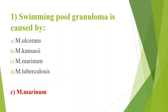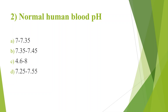Thus swimming pool granuloma is caused by Mycobacterium marinum. Second question: Normal human blood pH. Option A, 7 to 7.35; Option B, 7.35 to 7.45; Option C, 4.6 to 8; Option D, 7.25 to 7.55. Answer is Option B, 7.35 to 7.45.